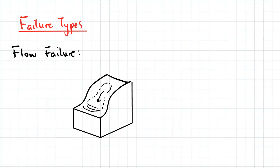Flow failure occurs when the conditions cause the soil to behave as a viscous fluid. This can occur in both dry and wet soils. The soil flows down the surface of the slope.